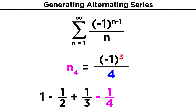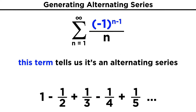If we continue in this manner, we see how the number in the denominator increases by one each time, as expected, but because the term in the numerator alternates between positive and negative one, the terms in the series alternate between positive and negative, all the way to infinity. So any time you see a series and there is a negative one in parentheses being raised to the n power or something similar, you know that you are looking at an alternating series.